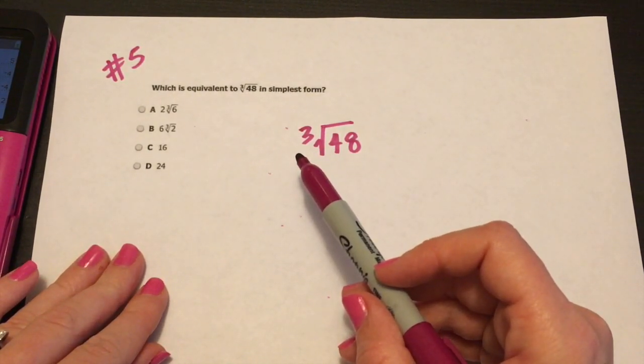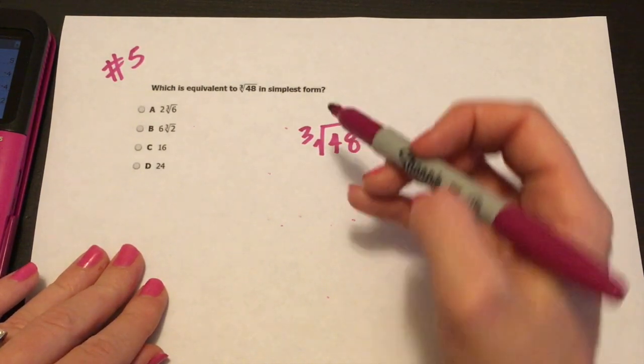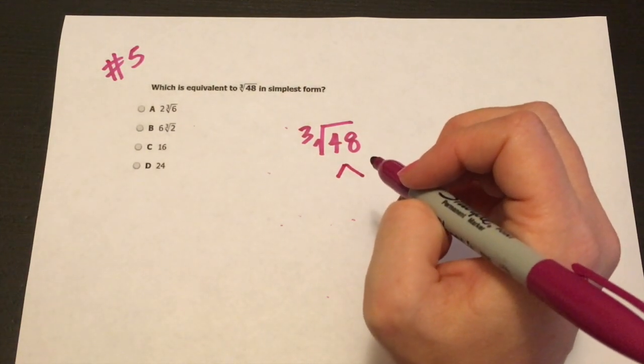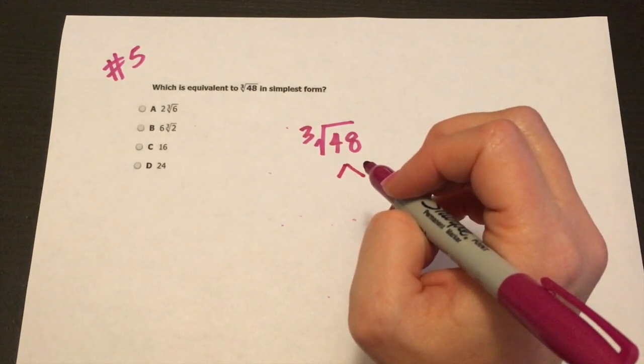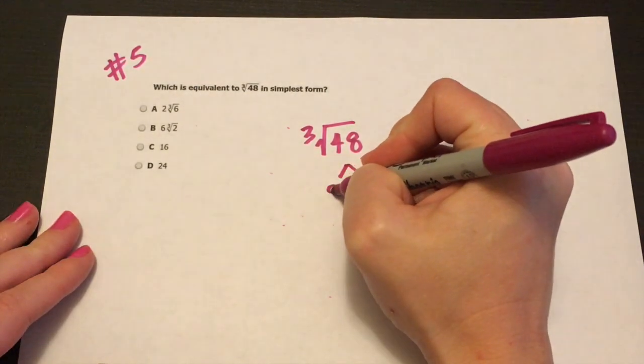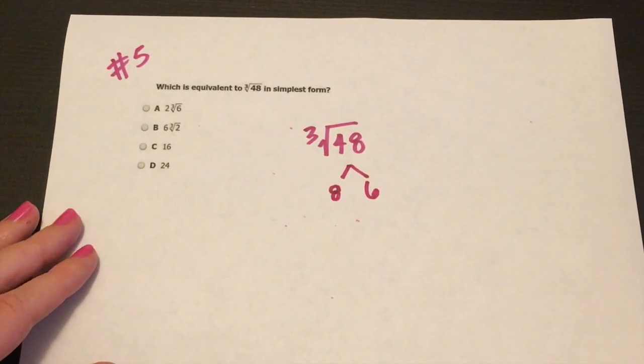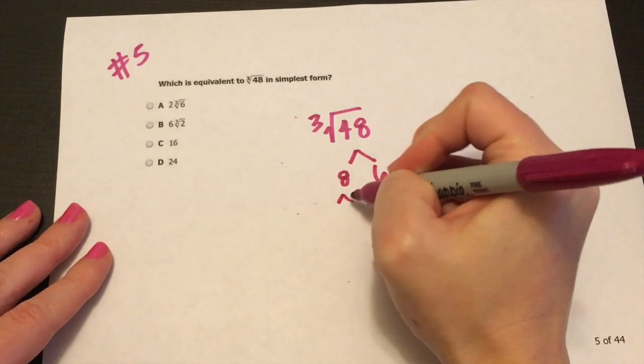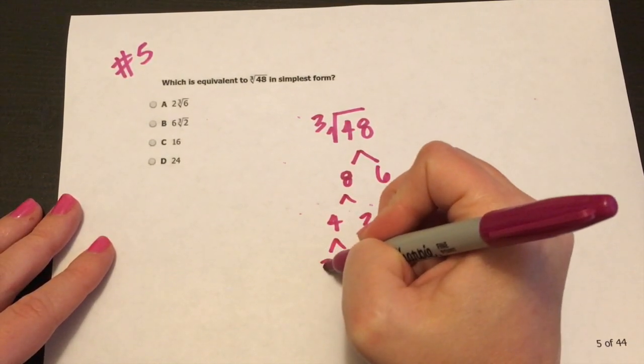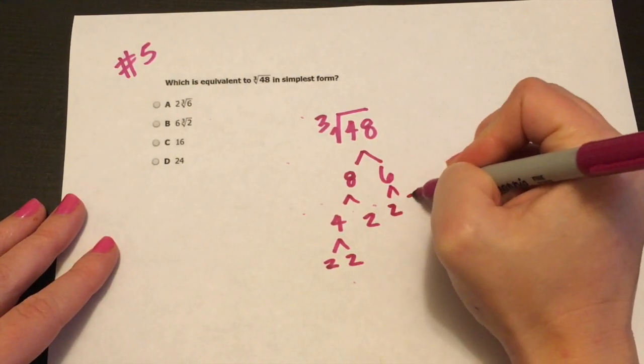So here we have to do 48. So I'm thinking, what are some factors of 48? And I instantly think eight and six. Eight and six. And then we have four and two and then two and two, right? And then this one's going to be two and three. So we're looking for a set of three.